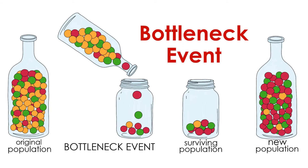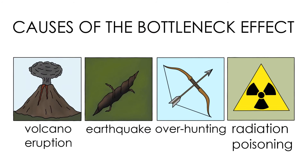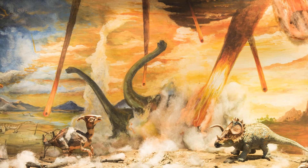Genetic drift may be caused by a bottleneck event, in which the size of a population is suddenly and randomly reduced, and the frequencies of characteristics in the new population differ greatly from those in the original. Bottleneck events can be caused by natural disasters like volcanic eruptions, earthquakes, and even asteroid impacts. A catastrophe that kills many but not all individuals can cause a bottleneck effect, potentially driving the evolution of life by randomly reducing population sizes.